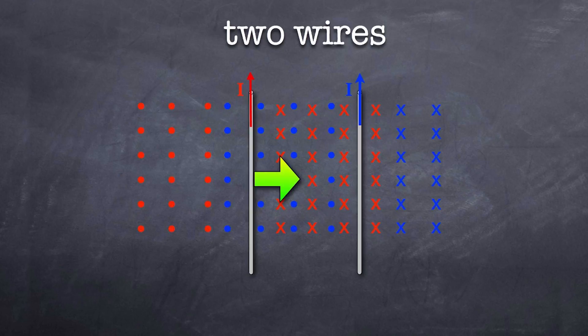Similarly speaking, the blue current going up the page is experiencing a red magnetic field. Using your right hand palm rule, that will mean it'll only be experiencing a force towards the left. In essence, what you observe is an attraction between the two.